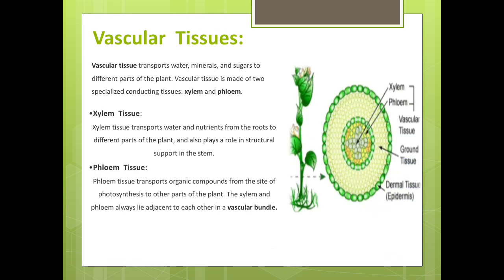Vascular tissues: you can observe here in diagram that xylem and phloem are collectively called vascular tissues. Vascular tissues transport water, minerals, and sugar to different parts of the plant. Vascular tissue is made up of two specialized conducting tissues: xylem and phloem. Xylem tissue transports water and nutrients from the root to different parts of the plant and also plays an important role in structural support in the stem. Phloem tissue transports organic compounds from the site of photosynthesis to other parts of the plant. The xylem and phloem always lie adjacent to each other in vascular bundles.